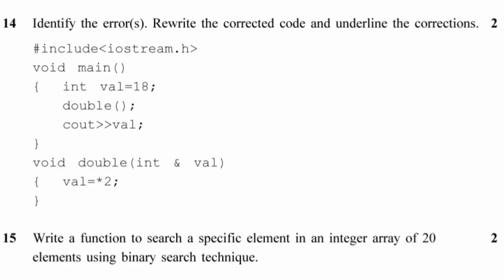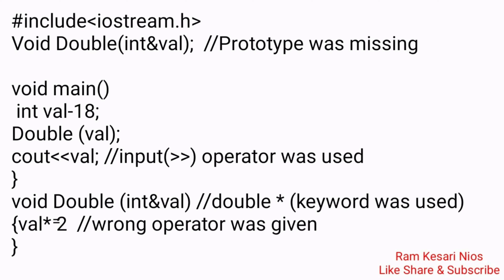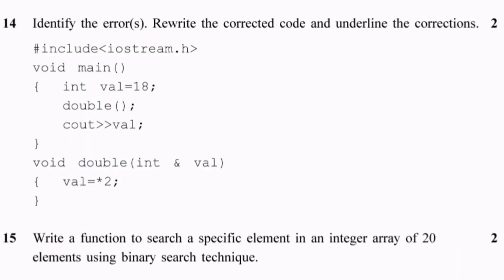Question 14: Identify the errors, rewrite the corrected code and underline the corrections. include iostream.h — void double(int &val) prototype was missing. void main() { int val = 18; double(val); cout << val; } — input operator was used incorrectly. void double(int &val) { double asterisk keyword was used; val *= 2; } — wrong operator was given.